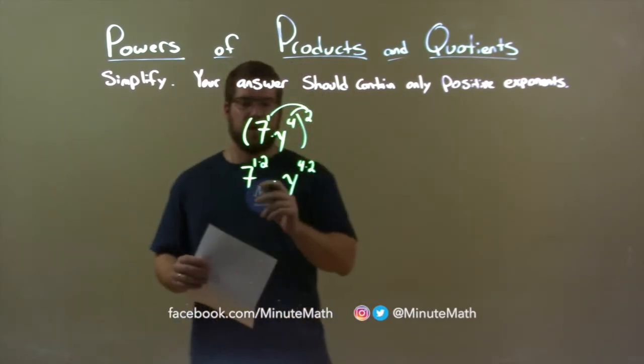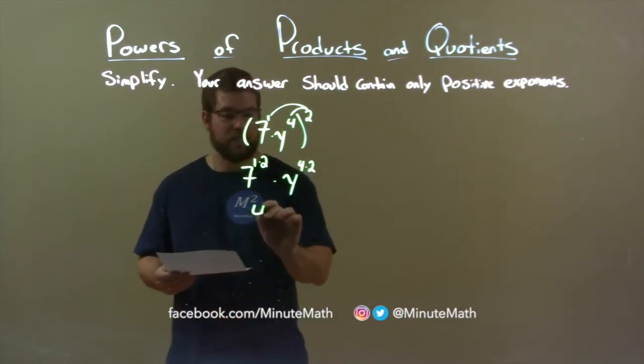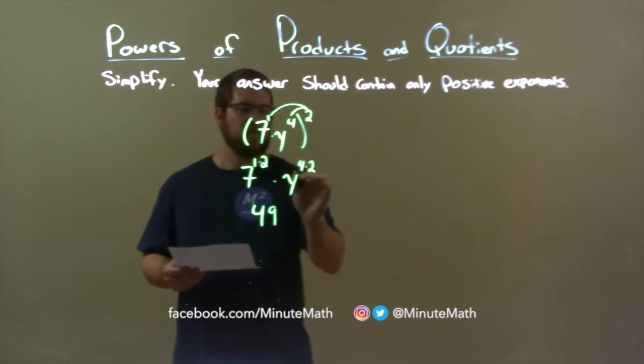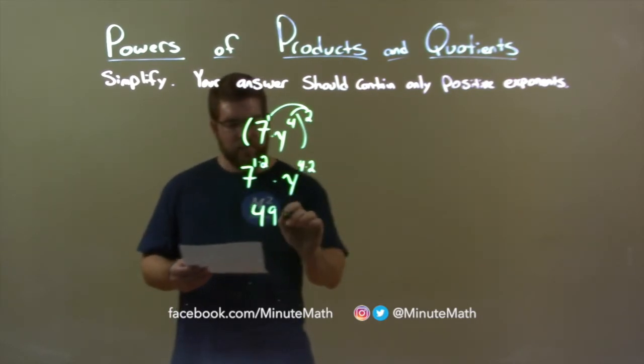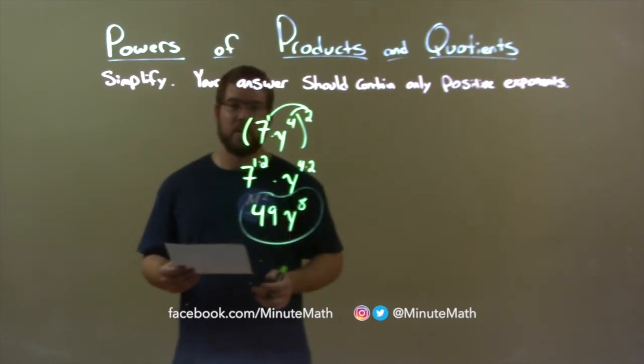Now, let's simplify. 1 times 2 is 2, and 7 squared is 49. 4 times 2 is 8, y comes down, so we have y to the eighth power, and our final answer now is 49y to the eighth power.